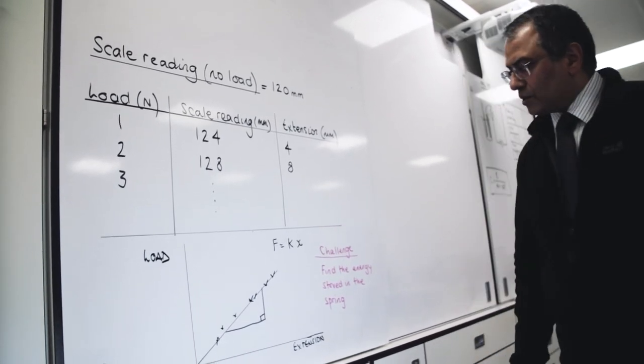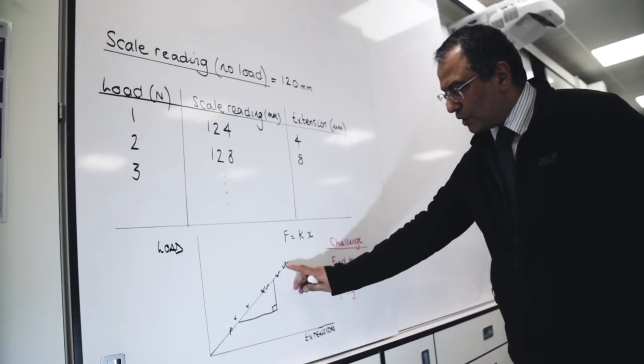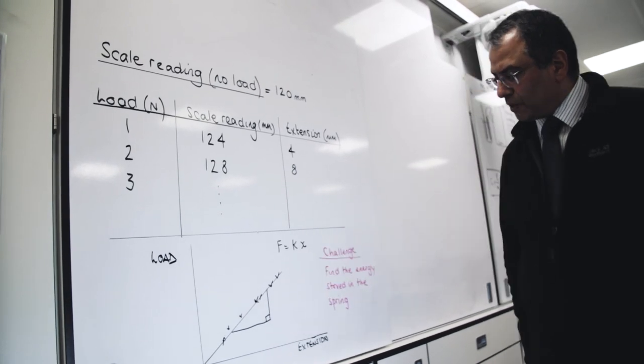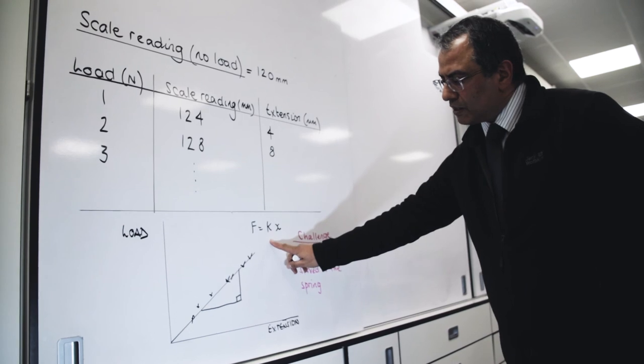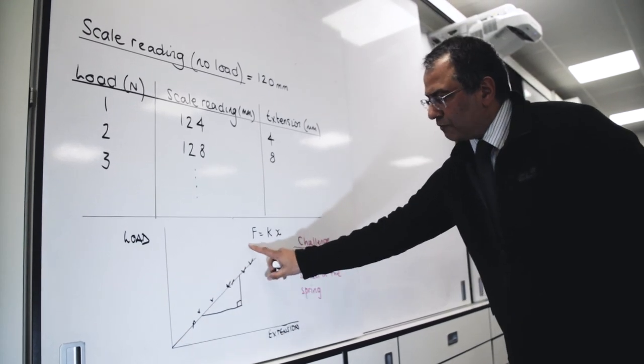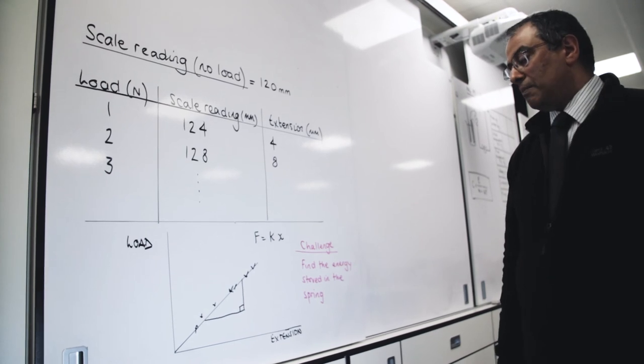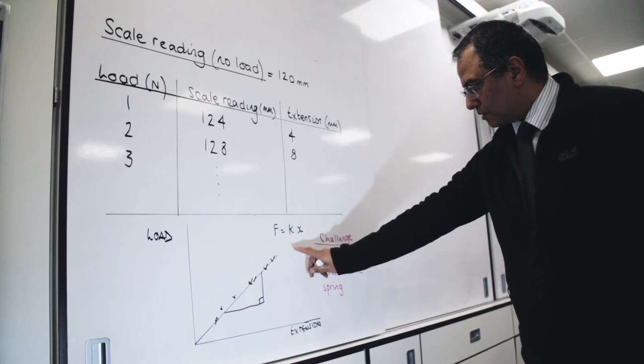Now, in new GCSE examinations, you may be required to work out the uncertainty here. If you watch a later video, you will be shown that once you've drawn your line of best fit, you can draw a line of worst fit and take the difference, and it will give you the margin of error for your calculated value of the spring constant.